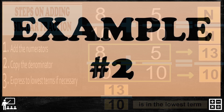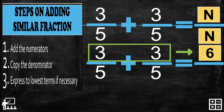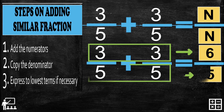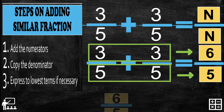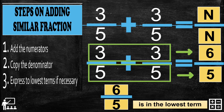Let's proceed to example number 2. Again, add the numerators. The numerators are 3 plus 3, so 3 plus 3 gives you 6. Step 2: copy the denominator. The denominator of the two fractions is 5. Last step: express to lowest terms if necessary. But 6 over 5 is already in lowest terms.